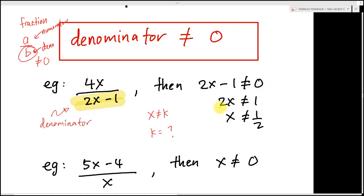Then 2x cannot equals to 1, then X cannot equals to 1 over 2. So 1 over 2 and K are in the same position, so K will be 1 over 2. It's quite easy.